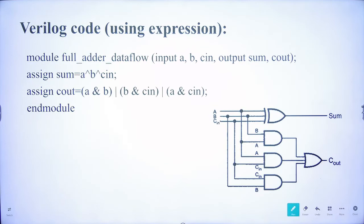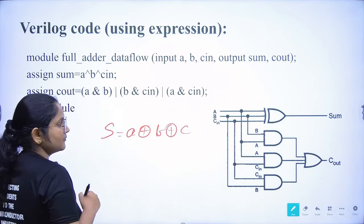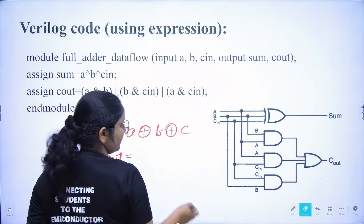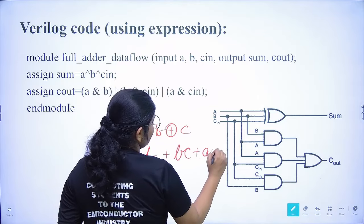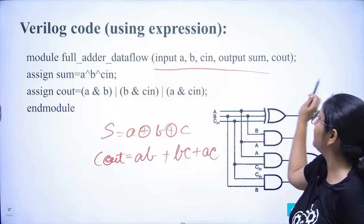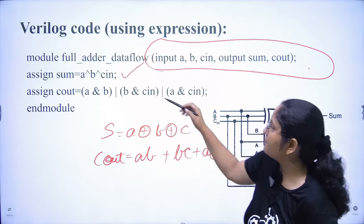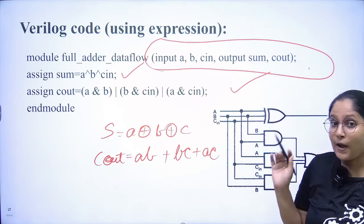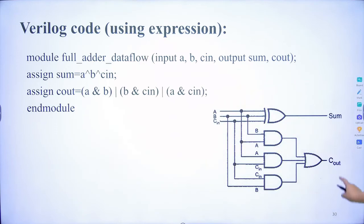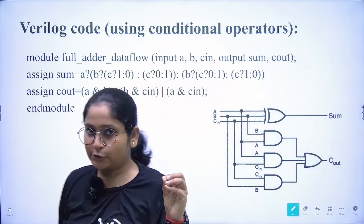For the full adder, sum = a XOR b XOR c, and carry-out = ab + bc + ac. I declare all inputs a, b, c and outputs sum and c_out in a single line, then use 'assign sum' and 'assign c_out' with the single boolean expression. This shows how easy it is to distinguish behavioral modeling from data flow modeling.